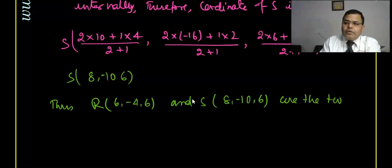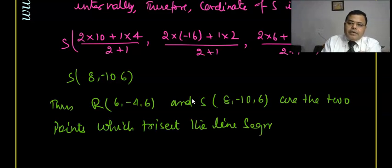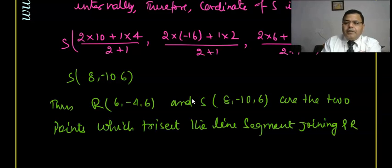Therefore R(6, -4, 6) and S(8, -10, 6) are the two points which trisect the line segment joining P and Q. That is the answer. I hope you got it. That's all for this lecture — thank you very much for watching. Do subscribe to this channel and don't forget to watch the next video.